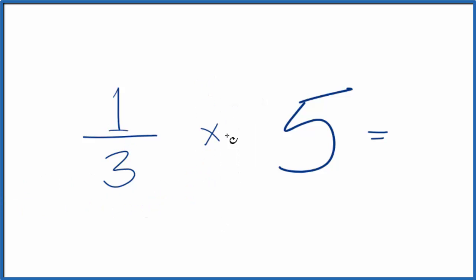So now we have one-third times five, and for the five, if we think of this as five over one, it's still five—five divided by one is five—but now we have numerators and denominators, and that's going to make it a lot easier to find one-third of five.